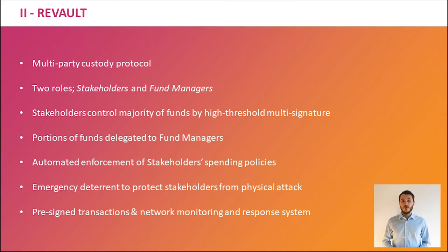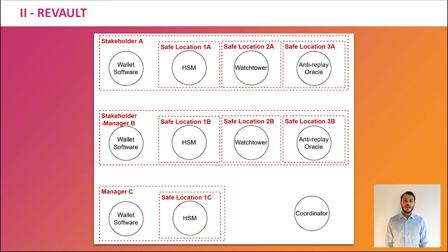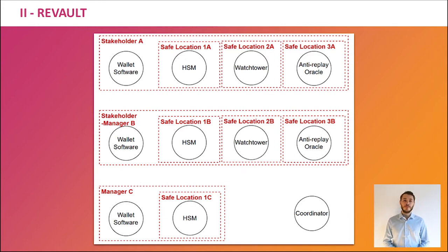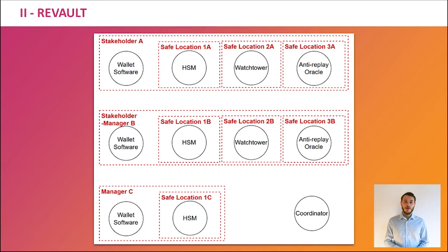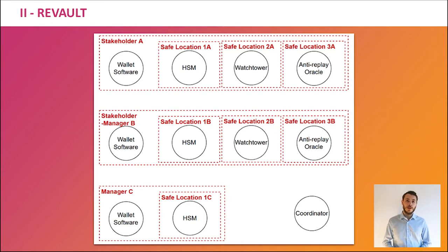I'll mention the most important concepts related to the components and the transaction set. Each stakeholder and manager has a hardware security module to manage their private keys and generate signatures for transactions. A backup of private keys is stored for each hardware security module in a separate protected physical environment. Each stakeholder and manager uses wallet software to track their co-owned Bitcoins, craft transactions, store transaction signatures, and communicate with each other through a coordinator. The coordinator is a proxy server that simplifies communication for the multi-party wallet. Stakeholders each have one or more watchtowers — online servers that enforce stakeholders' spending policy limitations — and each stakeholder has an anti-replay oracle server.